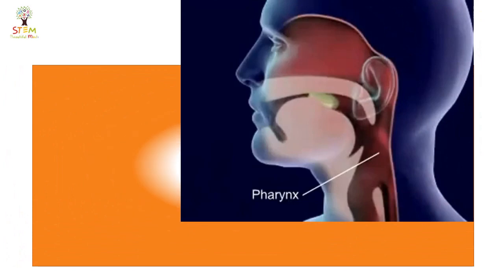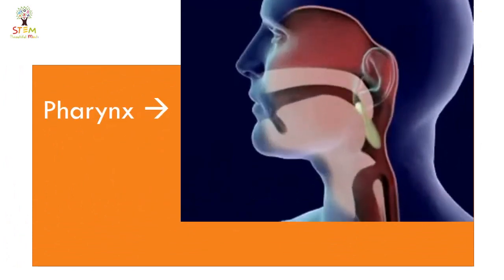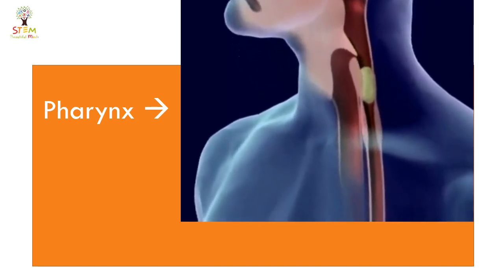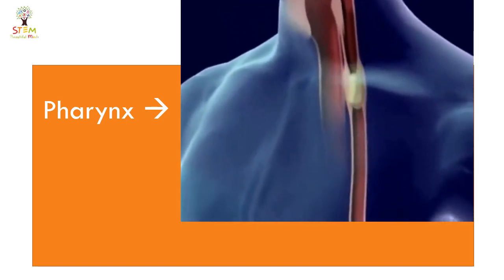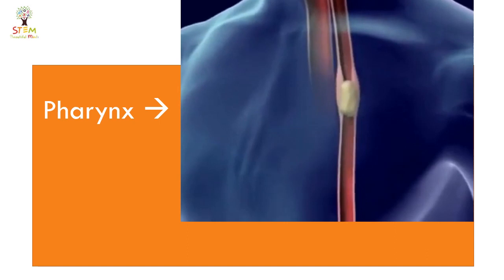The second organ is the pharynx. It's a common cavity between the digestive system and the respiratory system. It's a common passage between the food and the air.